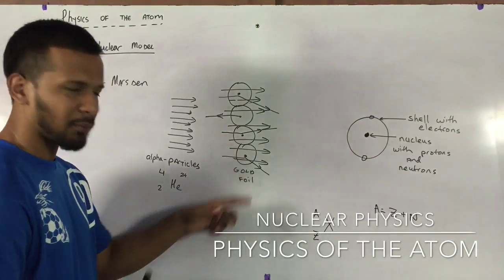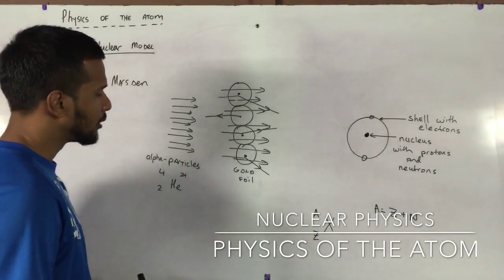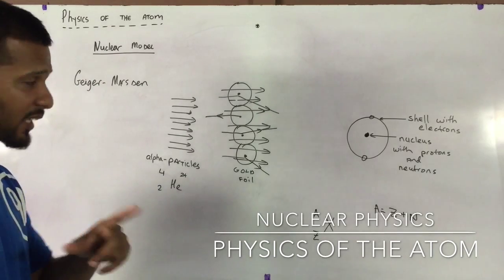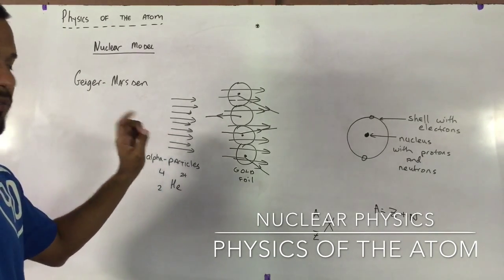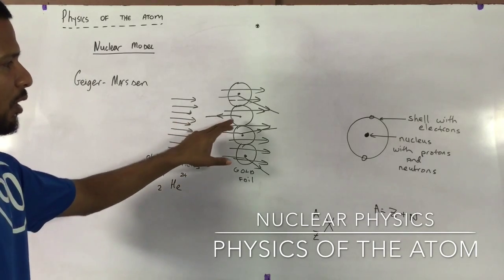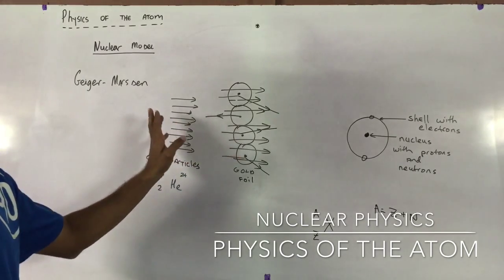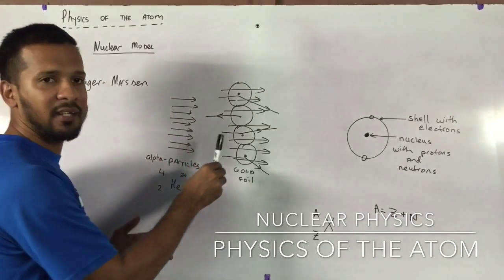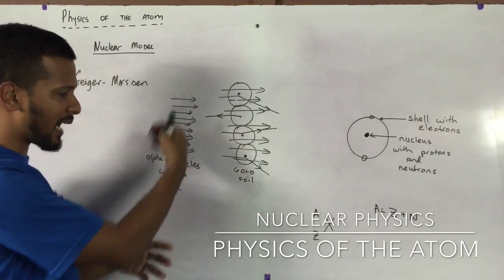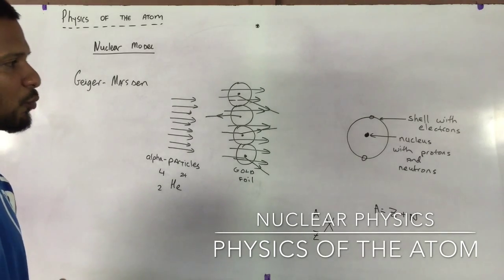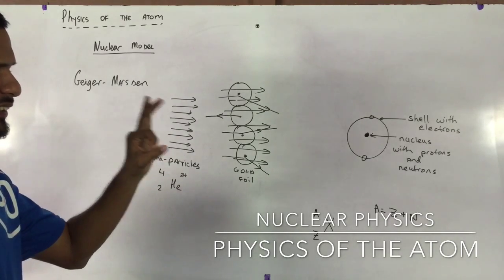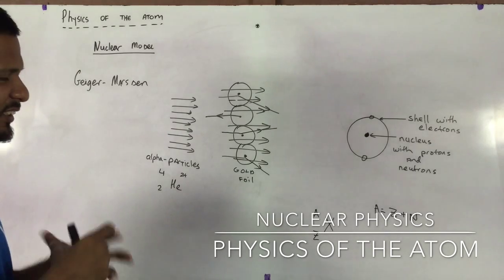So it must have some sort of positive charge in that core. They also observed one more thing: the alpha particles, one or two of them, a very small amount, were reflected. It means that it hit something and it came right back at the incident particles. What they concluded there was that the atom had a central core, and it was a solid core.